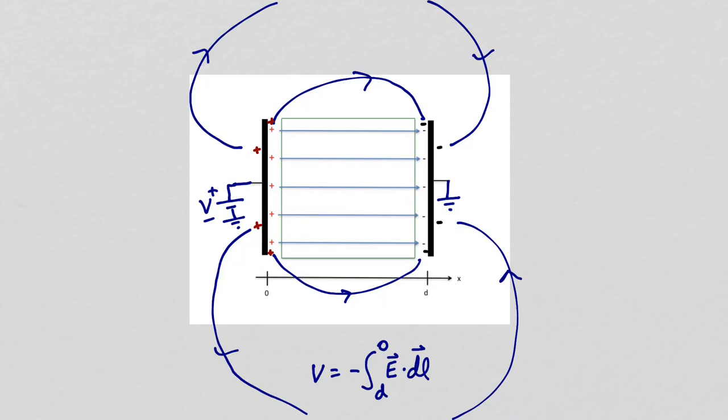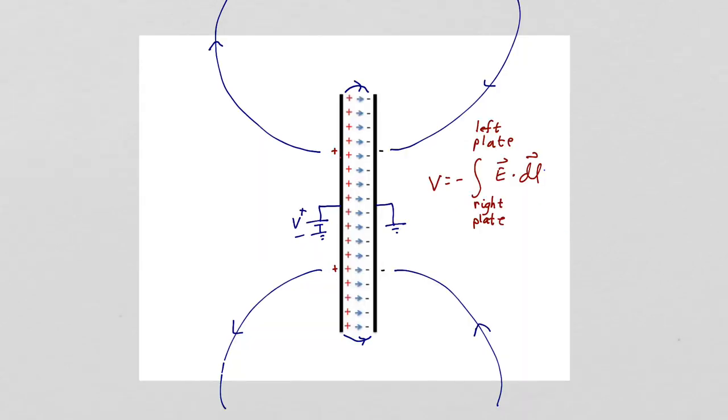For problems we look at in class, I will draw our capacitor structures like this for illustrative purposes, but I will state to ignore fringing fields. When I state to ignore fringing fields, I'm implying that the capacitor structure is really more like this, where you have narrow spacing between the plates and large plate areas.